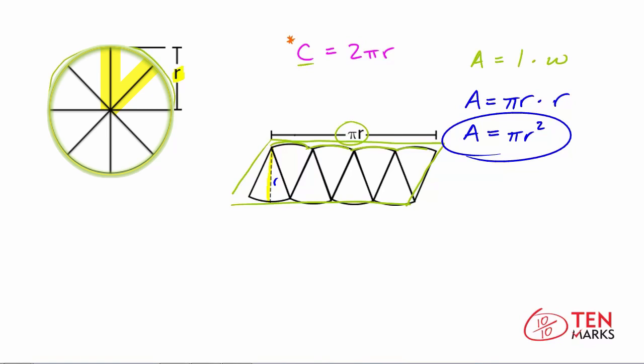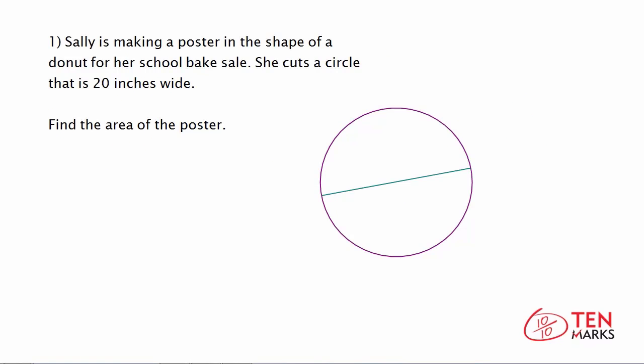Now let's try solving a problem together. Sally is making a poster in the shape of a donut for her school bake sale. She cuts a circle that is 20 inches wide. Find the area of the poster. Remember, the width of a circle is the same thing as the diameter. We know that value is 20 inches.